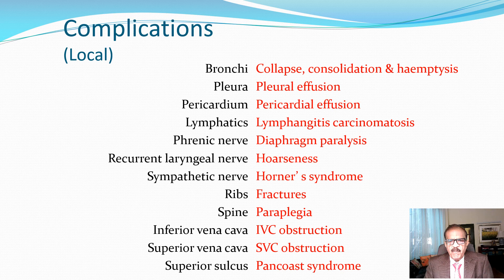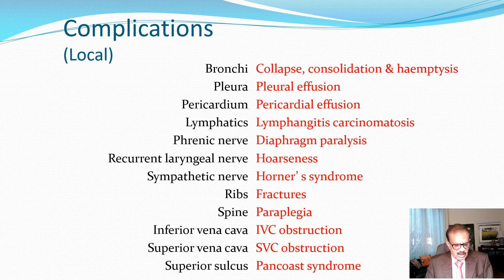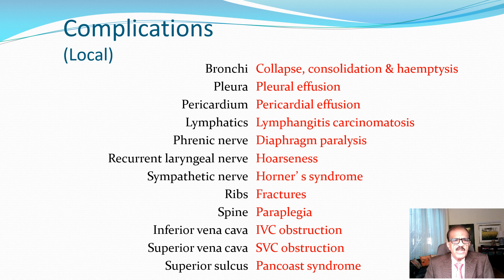It may also press on the superior vena cava and cause superior vena caval obstruction syndrome. Involvement of the superior sulcus may cause Pancoast syndrome — a complex of symptoms when the tumor is in the upper part of the lung, affecting structures going to the arm including subclavian vessels and nerves. Bronchogenic carcinoma does not respect anatomy; it eats up whatever comes in its way and can affect any or all of these organs, producing any symptom from the respiratory tract.